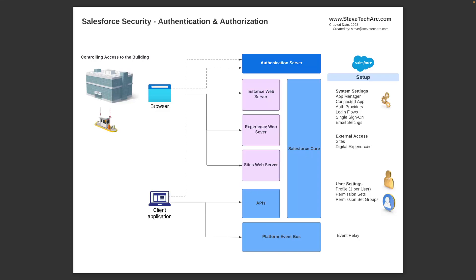Building level security covers several access paths. If you have a browser coming in, you'll be going to the authentication server, and then to the instance web server inside your primary Salesforce. You could go to a Salesforce Experience web page, or to a Sites page. You could be a client application that, after authenticating, hits the APIs, or hits the new PubSub API on the platform event bus. So the two main access mechanisms are: a human using a browser, or a client application authenticating and hitting the APIs.